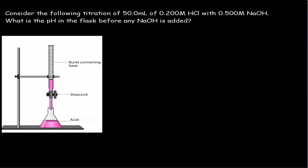The first question is: consider the following titration of 50 mL of 0.2 molar HCl with 0.5 molar NaOH. What is the pH in the flask before any NaOH has been added? This question is asking us to calculate the pH of the flask before any base has been added, and we're given the concentration of the acid inside the flask. Knowing that HCl is a strong acid, we know that it fully dissociates, so the concentration of HCl after it fully dissociates will be the same concentration as the H⁺ ion, or the proton.